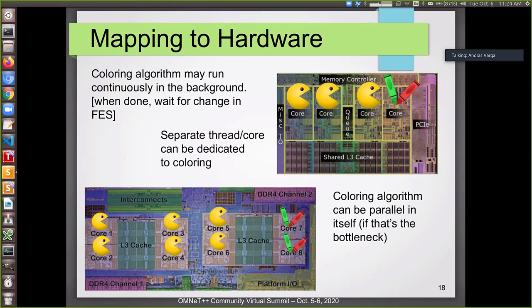So how would this look in hardware? It means that if you have like a four core processor, like three cores can run worker threads which process events and one core would be dedicated to running the coloring algorithm. And if the coloring algorithm becomes a bottleneck, then it is possible to design a coloring algorithm which works in itself in parallel. And then you can have like in an eight core configuration, you can have six cores working on processing simulation events and two cores working on coloring.